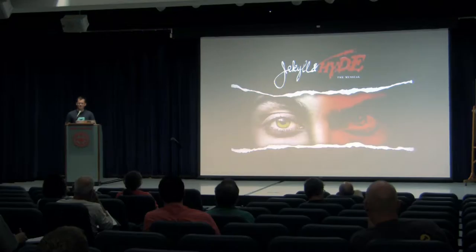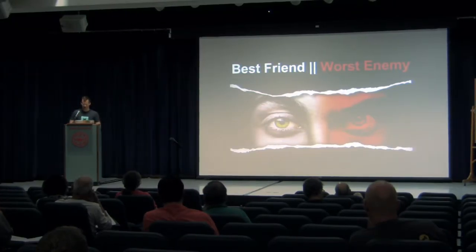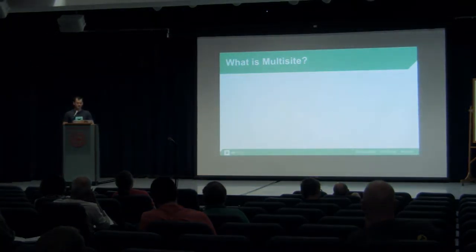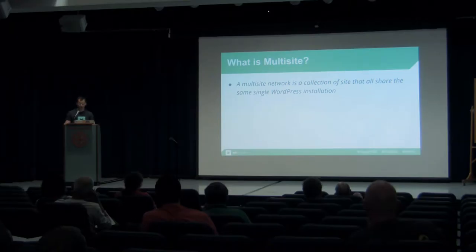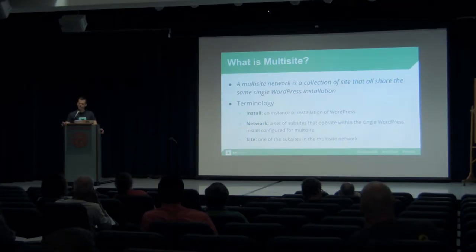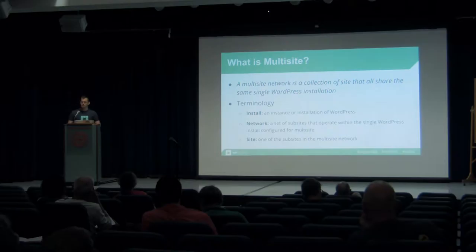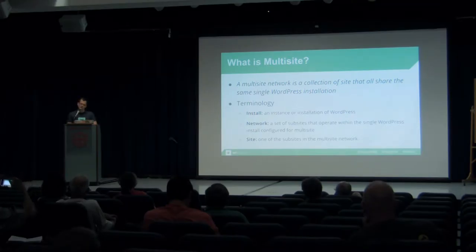Multisite: your best friend or worst enemy — most likely both at the same time. So what is a multisite? This is the definition on the codex: multisite is a collection of sites that share the same single WordPress installation. Let's unpack the terminology. An install is an instance of WordPress. A network is a set of sub-sites that operate within that install of WordPress — one install of WordPress, many sites. A site is one of those sub-sites. I have people who come up and say 'I want a multisite because I've got a site and I want to put a lot of categories in it' — and that doesn't sound like a multisite.